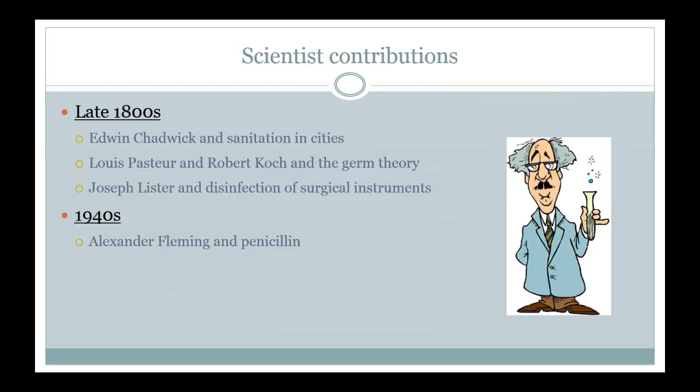We'll talk about some key scientists here. The need for sanitation came about in the late 1800s. Louis Pasteur and Robert Koch came up with germ theory — basically the theory that microorganisms did indeed cause disease. Another scientist we'll cover is Joseph Lister and disinfection, and also Alexander Fleming and the invention of penicillin, which you probably know as a current antibiotic.